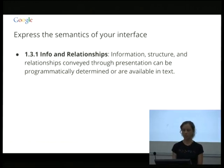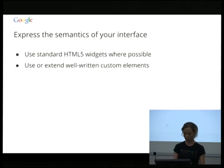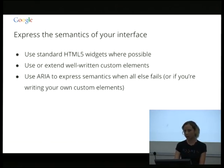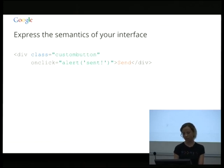The next thing you need to do is express the semantics of your interface. The relevant recommendation: information, structure and relationships conveyed through presentation can be programmatically determined or available in text. When you're using assistive technology, it needs to be able to determine the structure of the page — things like 'this is a button' or 'this menu button controls this particular menu.' Again, using standard widgets or well-written custom elements wherever possible. If not, you're going to need to learn to use ARIA to express the semantics of your custom elements.